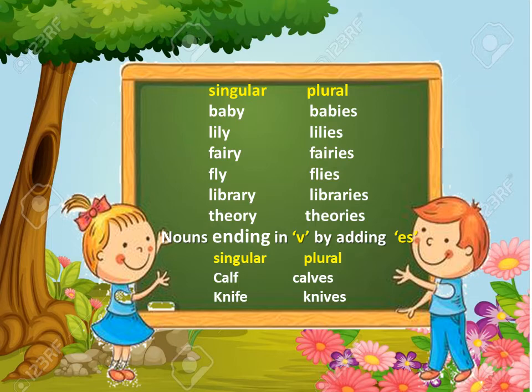Some nouns ending in F or V change into plural by adding ES. Here are some examples: calf → calves, knife → knives.